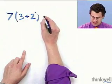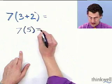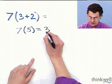So if I do that first, what I see is 7 times 5, and that equals 35. So what's the big deal?